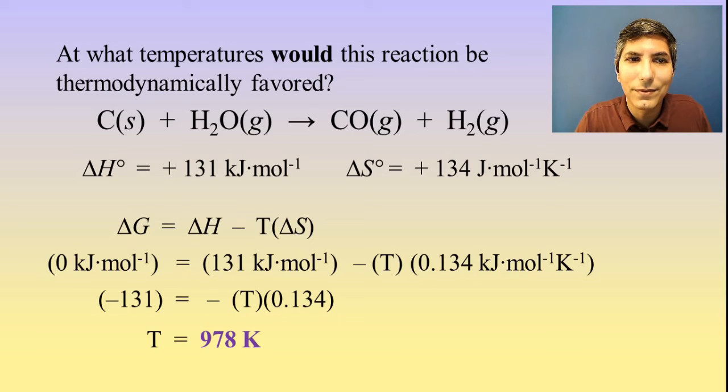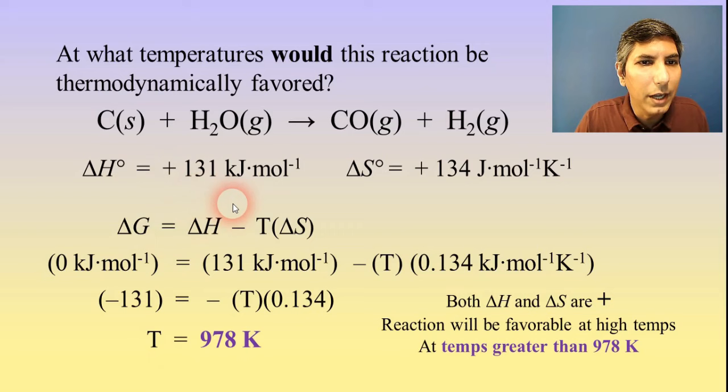So what this means is that since both delta H and delta S are positive, we know this is going to be a thermodynamically favored process at relatively high temperature. So that means at temperatures higher than 978 kelvins. So that's the answer. If I can get this reaction above 978 kelvins, all of a sudden this reaction is going to be thermodynamically favored.